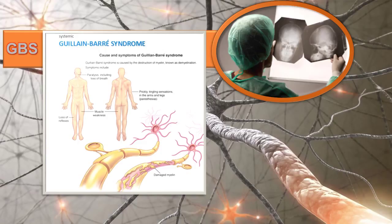GBS patients may have ascending paralysis, sensory changes, cranial nerve involvement, and autonomic manifestations. The paralysis may increase in intensity until the muscles cannot be used and the patient is almost completely immobile, and sometimes the patient may get so weak that they require mechanical ventilation.